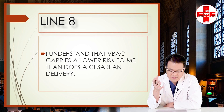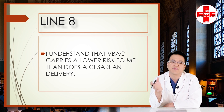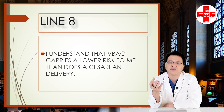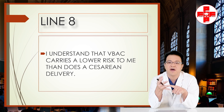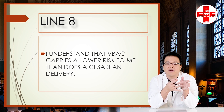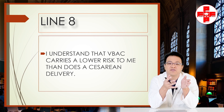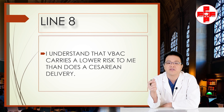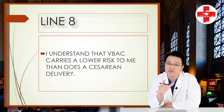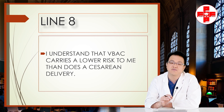Line eight is the opposite of line five: 'I understand that VBAC carries a lower risk to me than does a cesarean delivery.' The risks to mom in terms of maternal death were higher in the scheduled C-section arm — more than five times higher than in the trial of labor after C-section group. But similar to the fetal risks, the absolute risk is still very low.